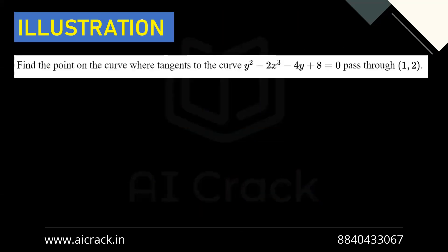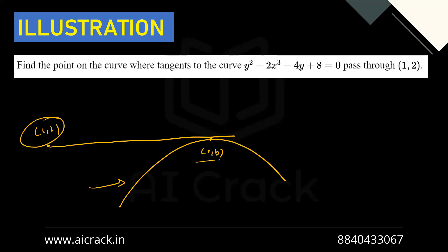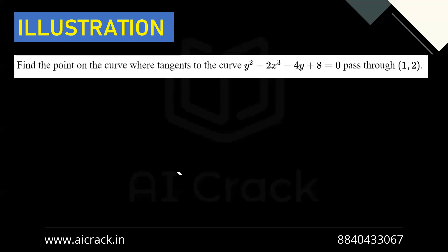Example: find the point on the curve y² - 2x³ - 4y + 8 = 0 where tangents pass through (1, 2). The external point is (1, 2) and the foot of the tangent on the curve, (a, b), is unknown. We need to find (a, b).